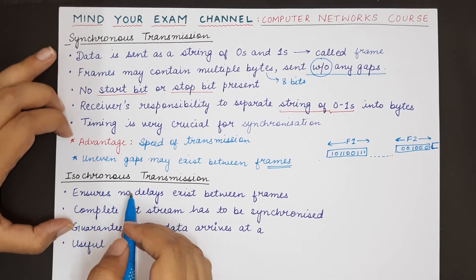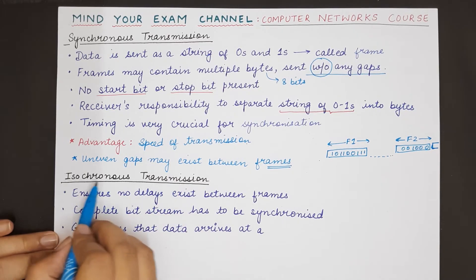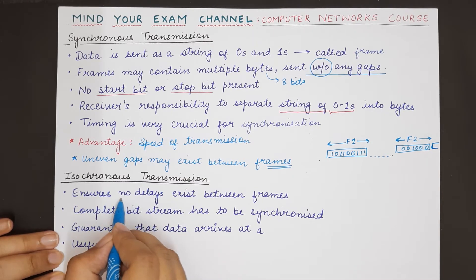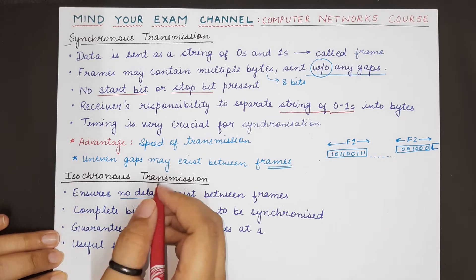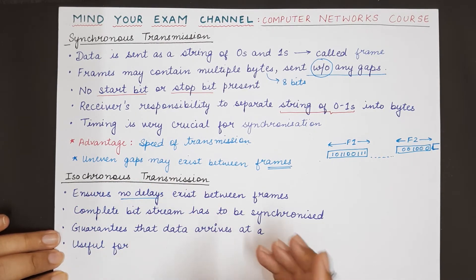Coming to the third type of serial transmission: isochronous transmission. In isochronous transmission, we ensure that no delay happens of any kind. The data being transmitted must not be delayed in any form.